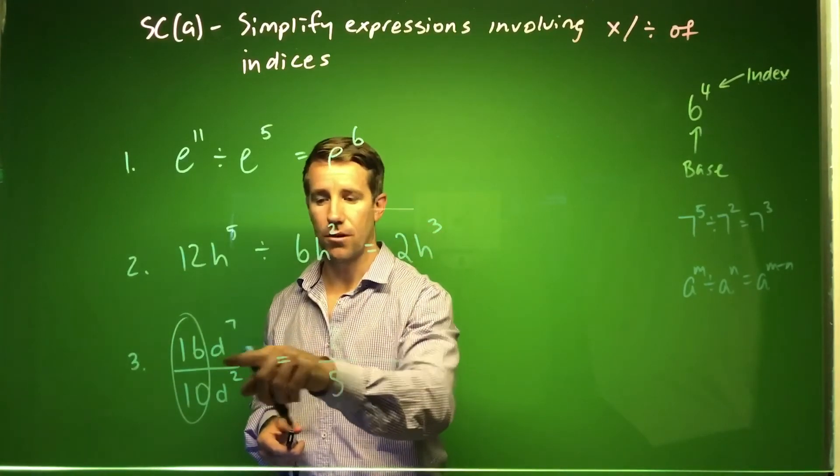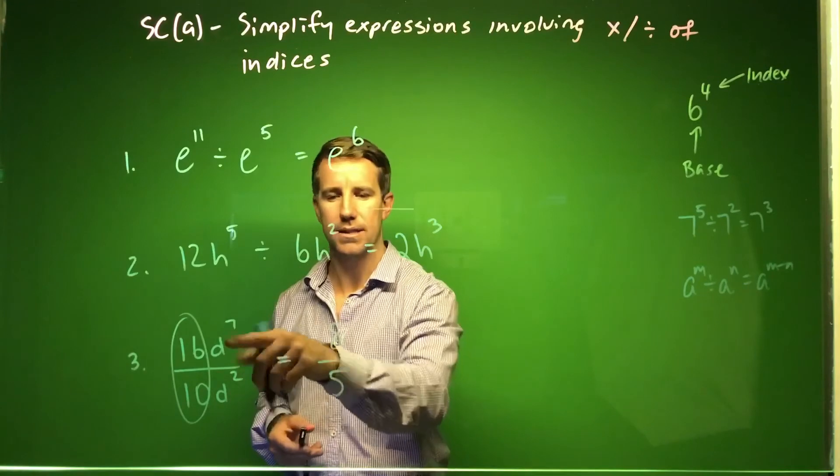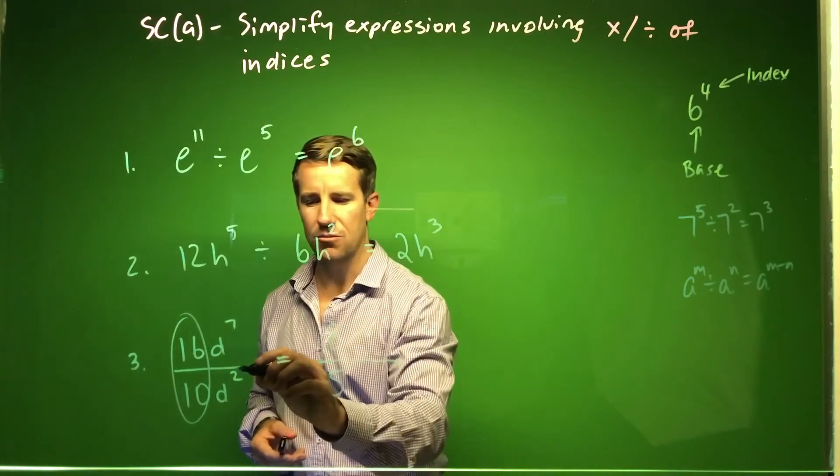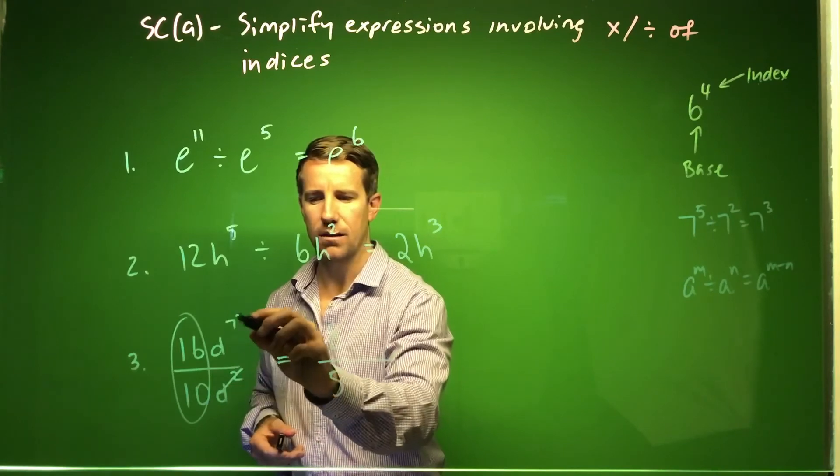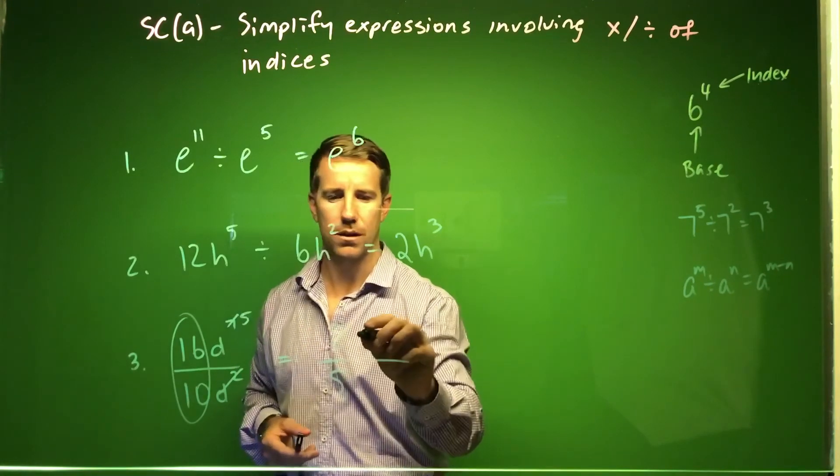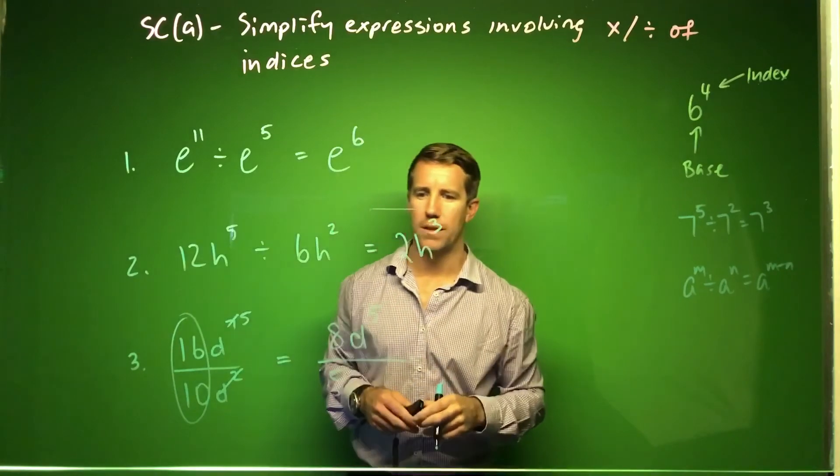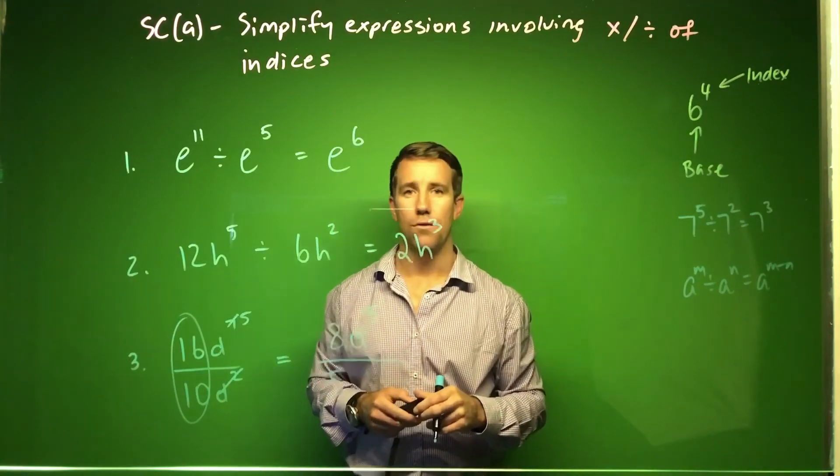We've got d to the power 7 divided by d squared. So again, we've got the same base, and we're going to subtract from each other. So if I take the d squared off here, that means I've got to take 2 off the top here to be left with d to the power 5. So overall that one there, 8d to the power 5 over 5.